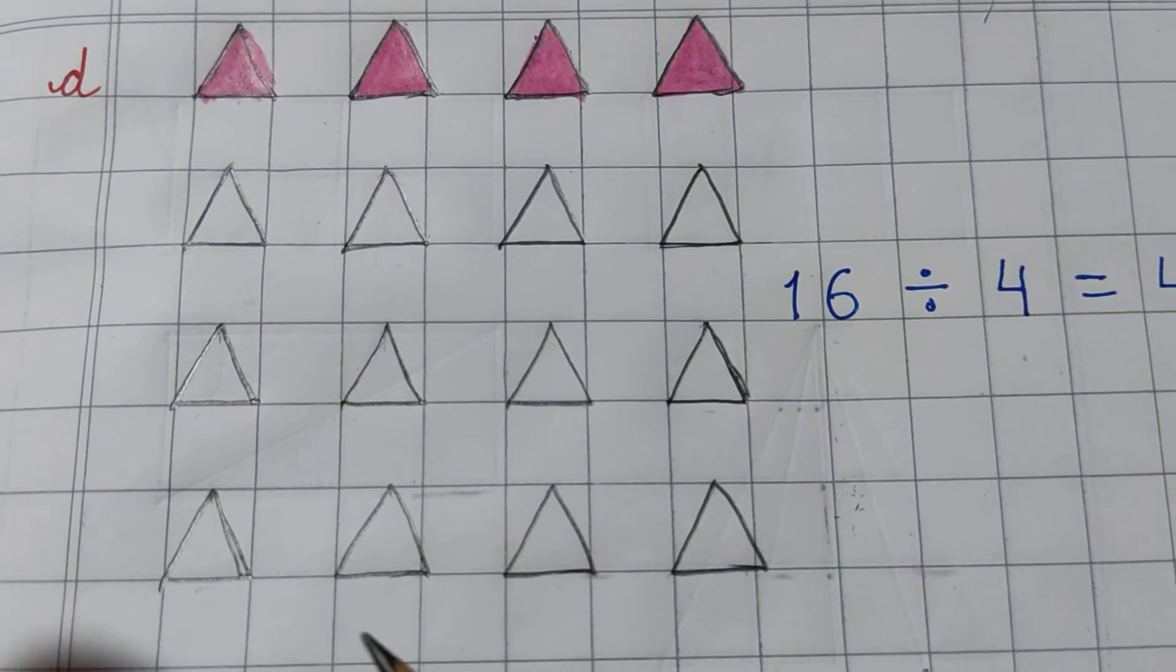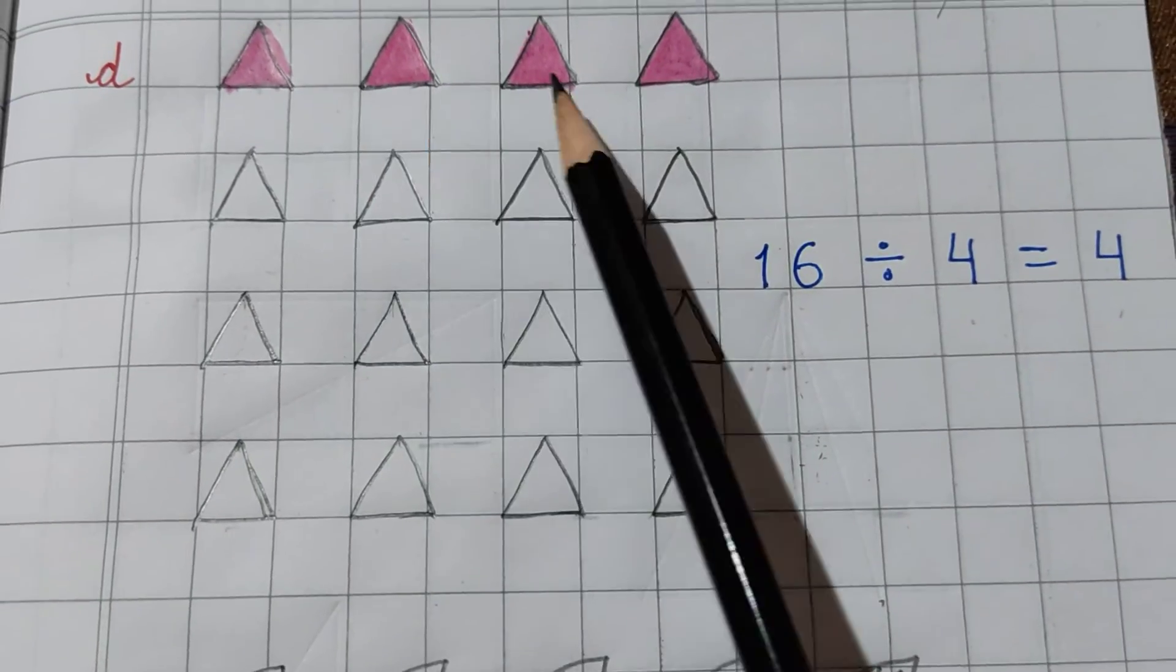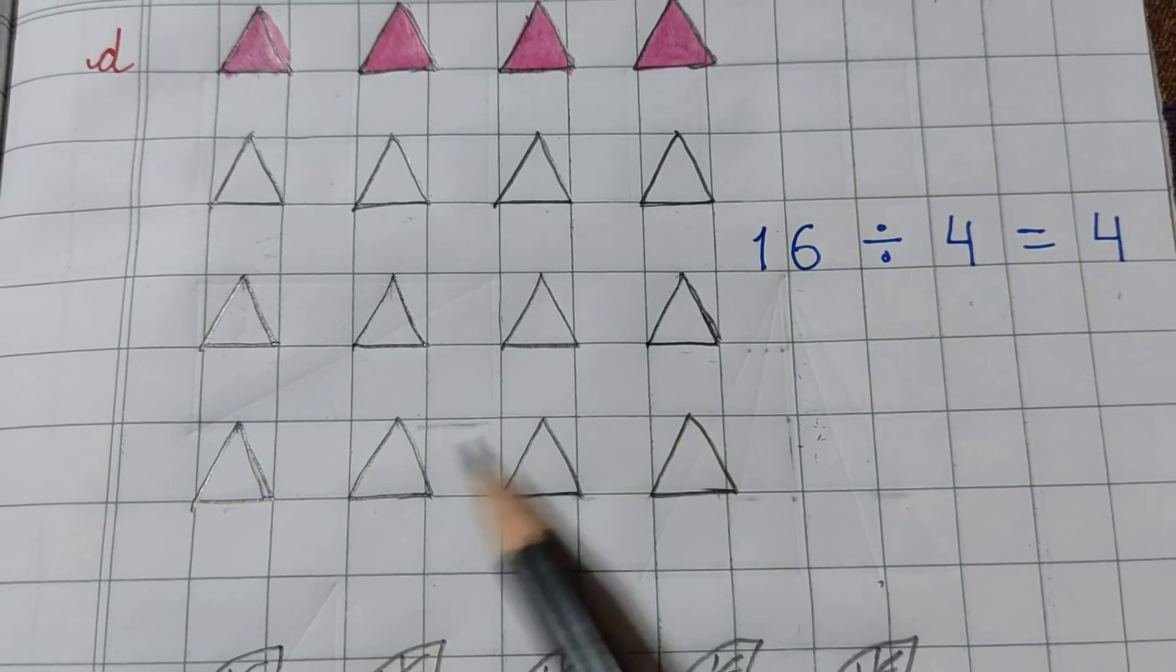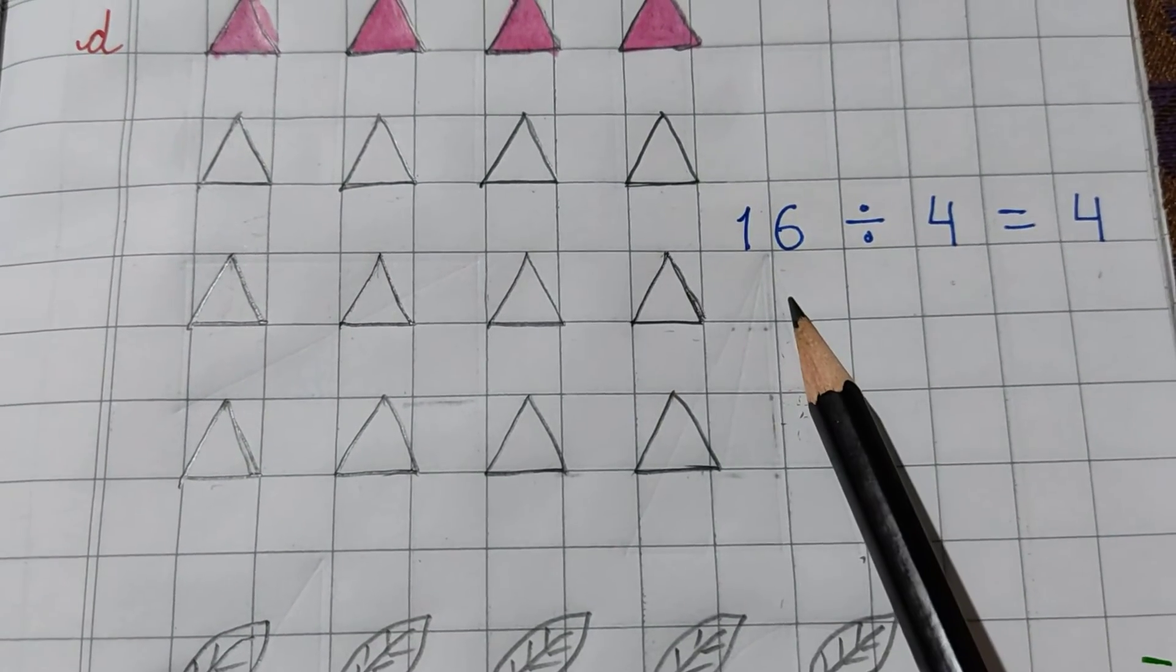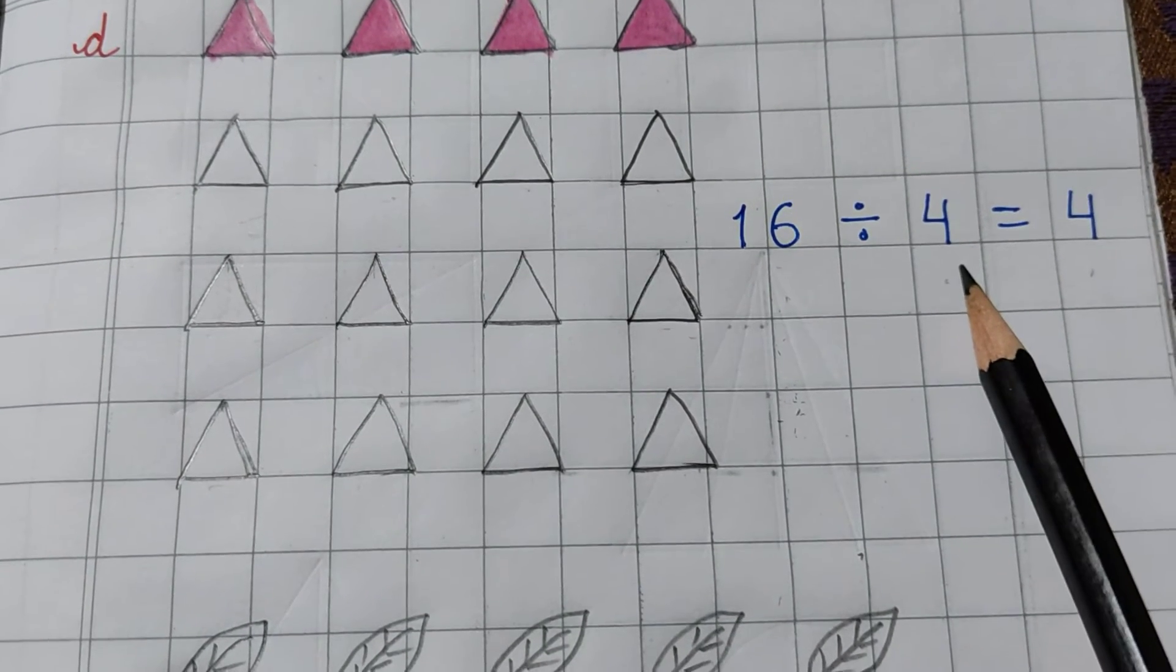In D part, I have taken some triangles here. Let's count 1, 2, 3, 4, 5, 6, 7, 8, 9, 10, 11, 12, 13, 14, 15, 16. These are 16 triangles. So, I have written 16 here. We are doing one-fourth. That is why we have to divide it by 4.